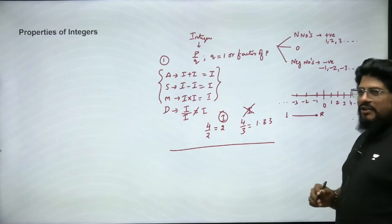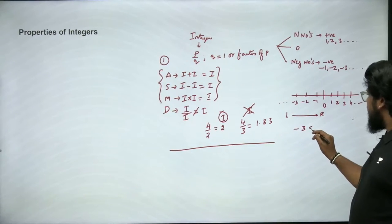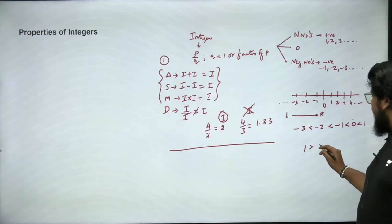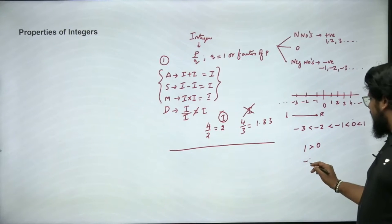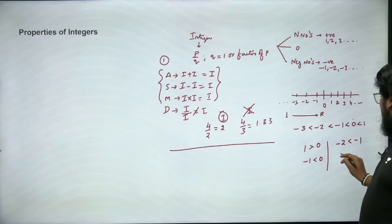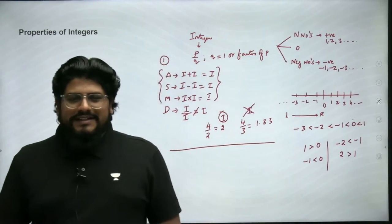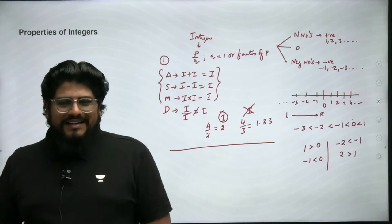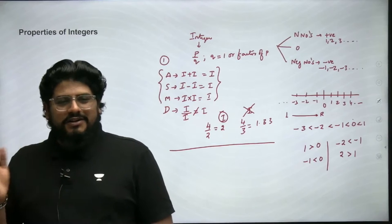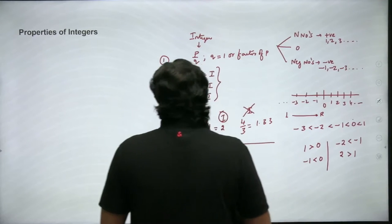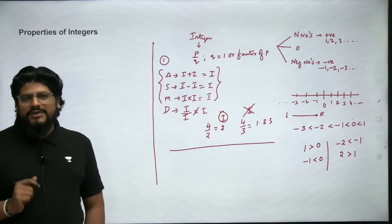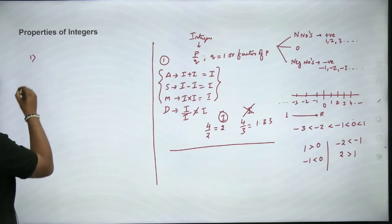As you move from left to right on the number line, the numbers' value keeps increasing. So −3 < −2 < 0 < 1. One is greater than zero, but −1 is less than zero. Similarly, −2 is less than −1, and 2 is greater than 1. Moving from left to right — from minus infinity to plus infinity — the value keeps rising. Now let's come back to the actual properties of integers.